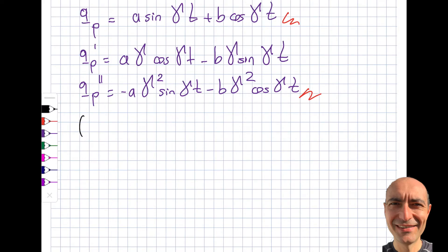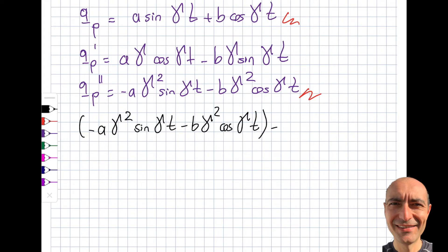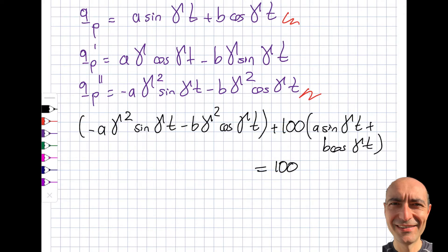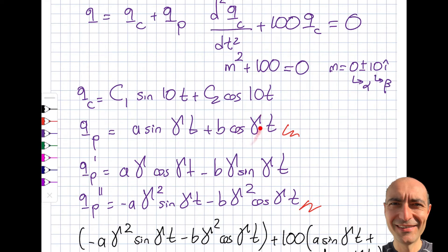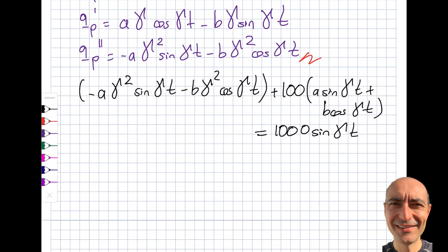Substituting into the equation: (−Aγ² sin(γt) − Bγ² cos(γt)) + 100(A sin(γt) + B cos(γt)) = 1000 sin(γt). Even though the right-hand side only has sine, I must include cosine too — you can't assume only a sine term will work without checking the mathematics. Now I group by sin(γt) and cos(γt) terms on the left-hand side.